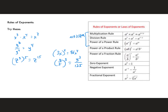For fractional exponents: the denominator of the fractional exponent becomes the index of the radical, and the numerator becomes the power inside. For example, 4^(3/2) equals the square root of 4³. You can evaluate in either order — cube 4 first to get 64, then take the square root (= 8); or take the square root of 4 first (= 2), then cube it (= 8). Either way gives 8. Quick review of algebra concepts — enjoy and good luck!